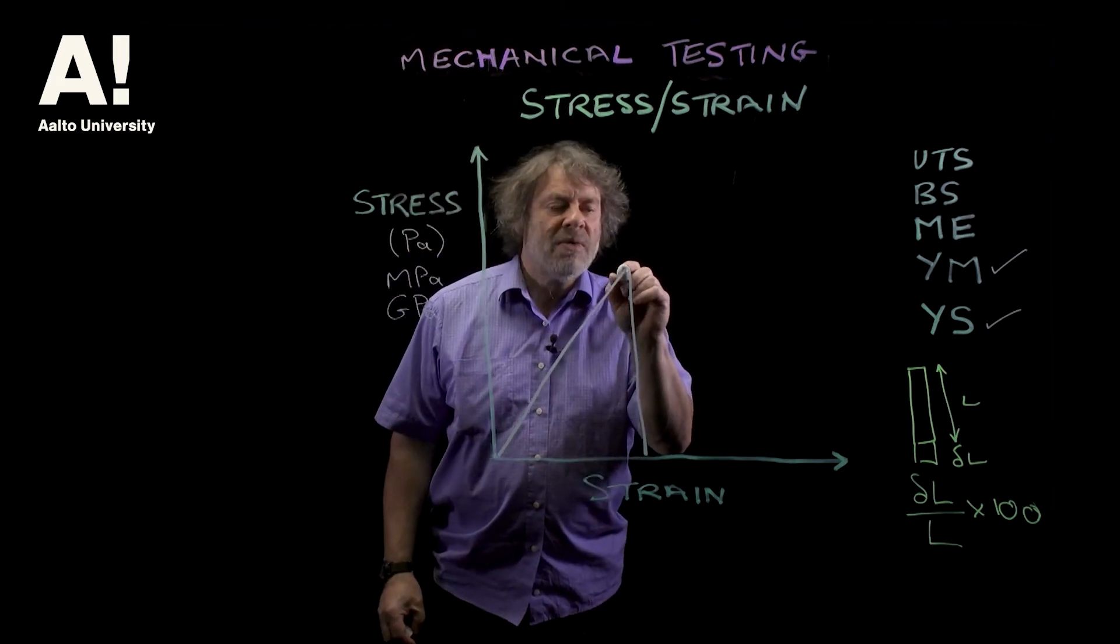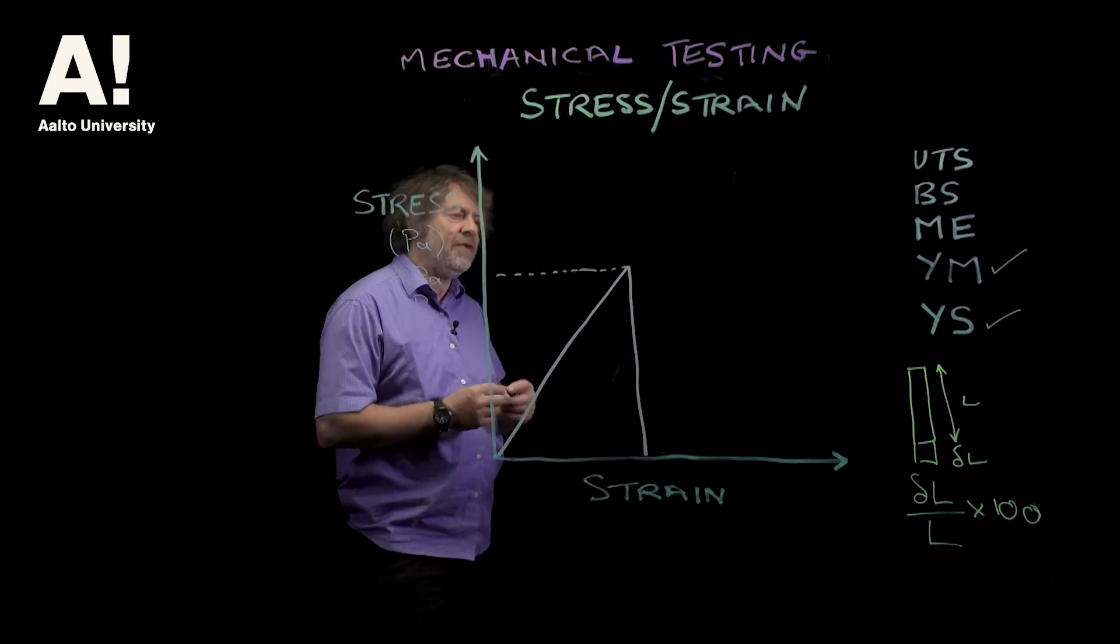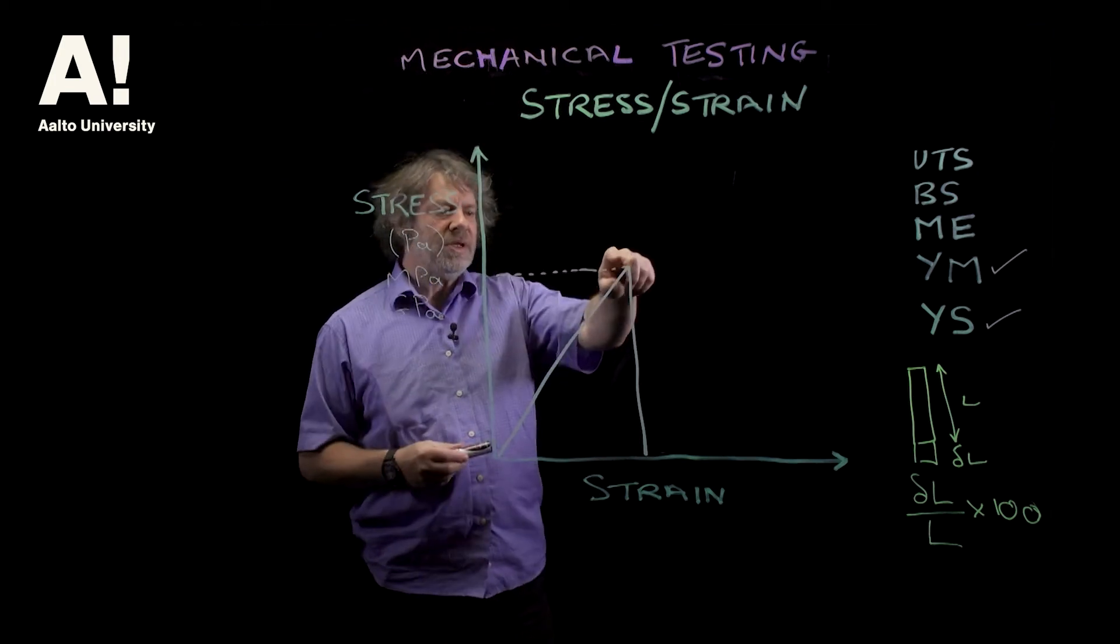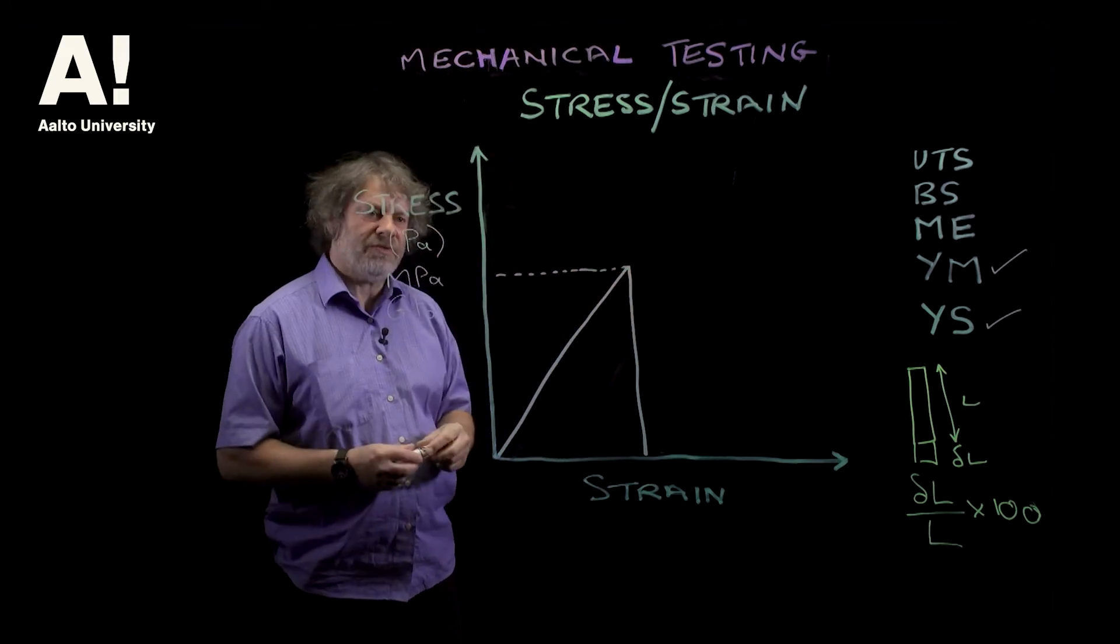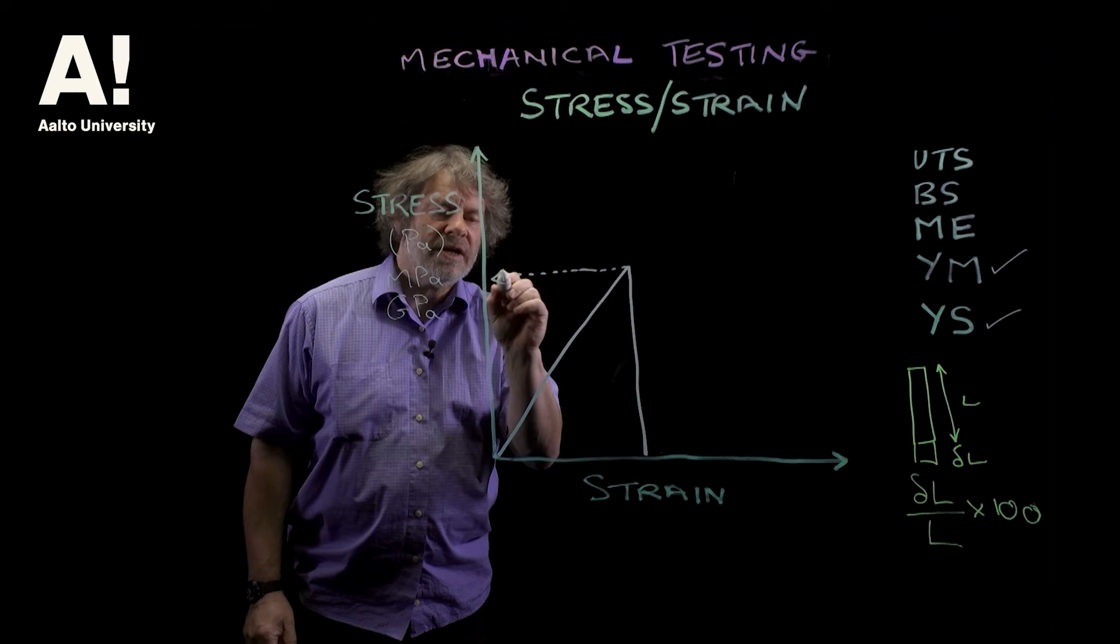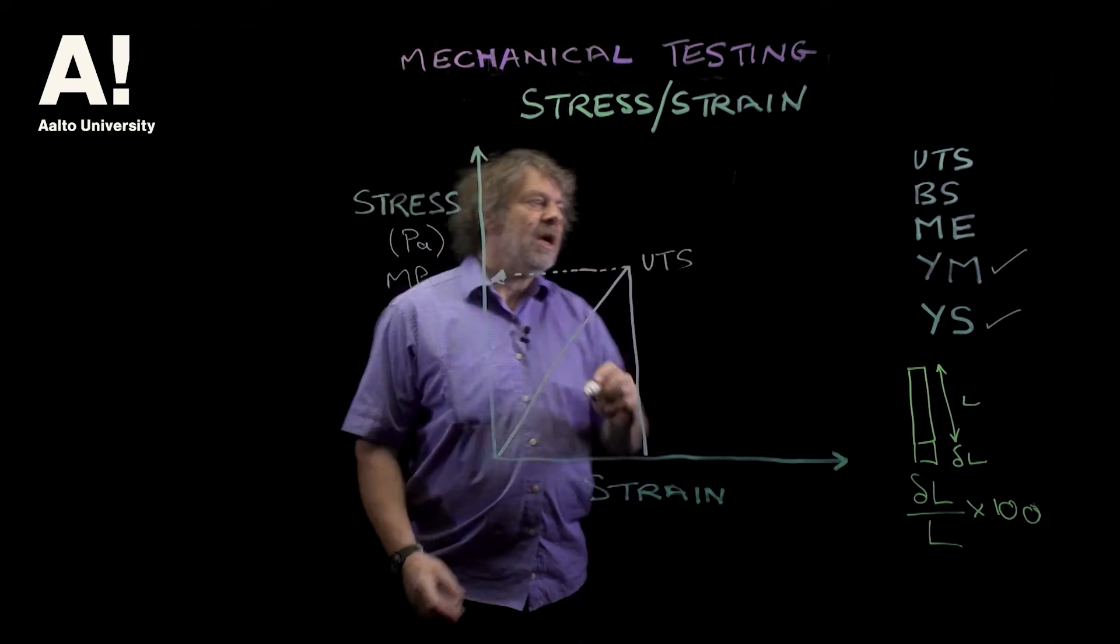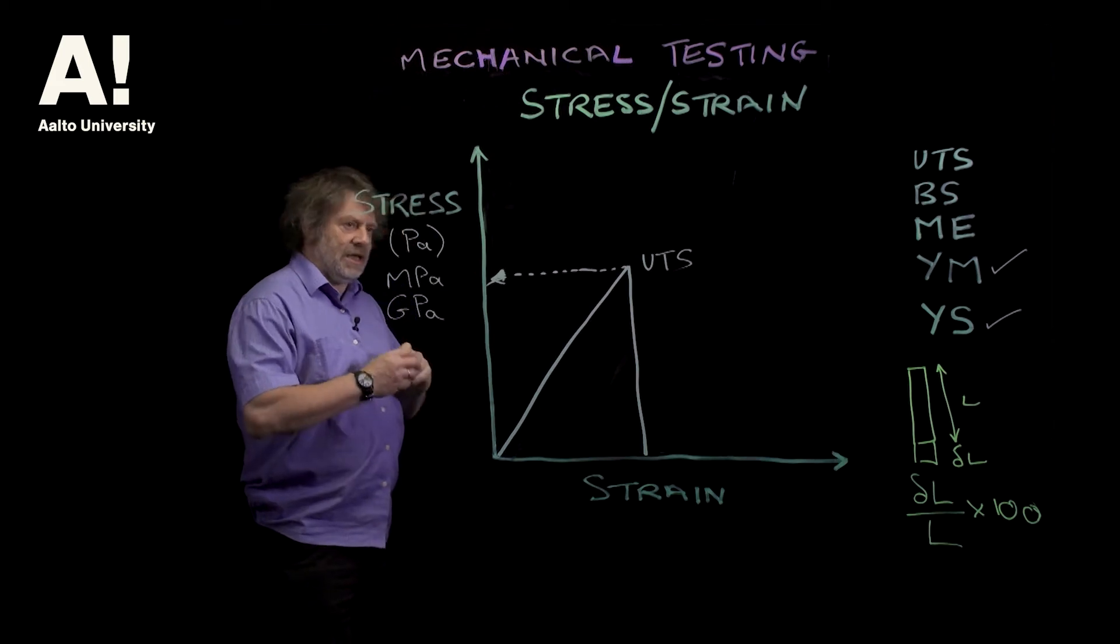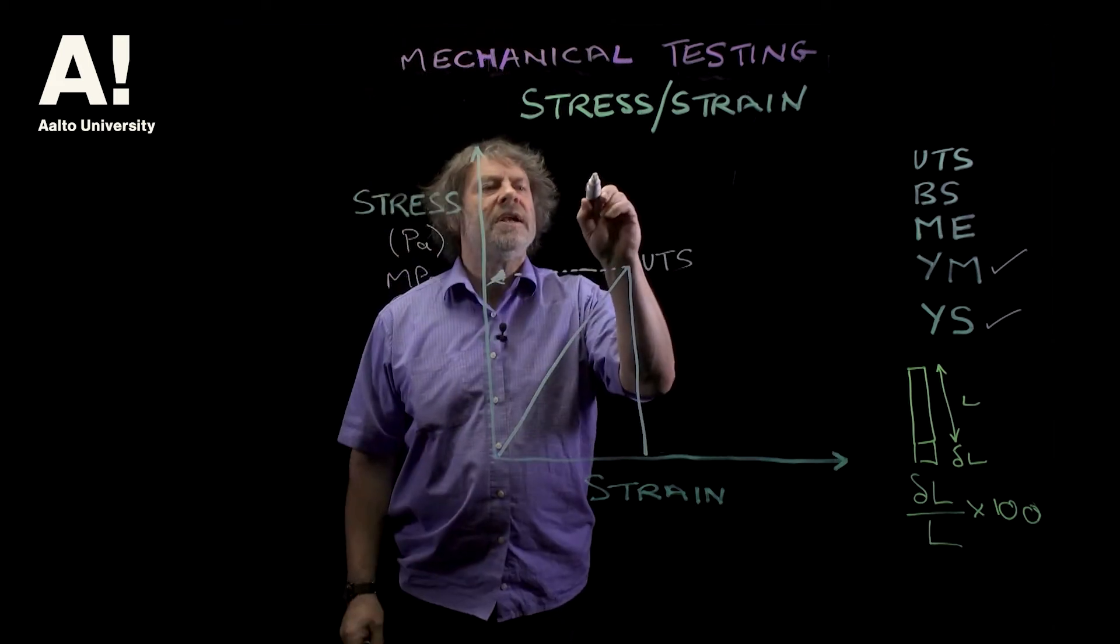So here we have not reached a hooking limit, we haven't reached a yield point, we've just had hooking behavior up to the point of failure, and the point of failure here is called the ultimate tensile stress, and this is very characteristic of brittle materials like glass for example.